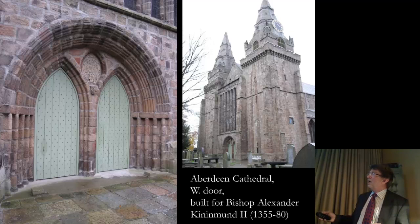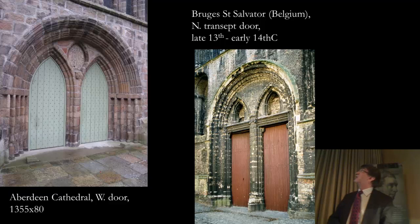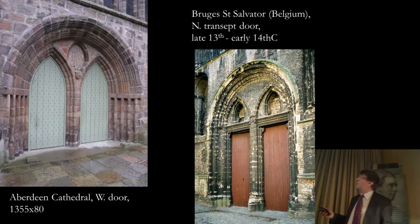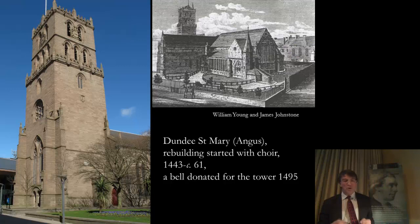I just wanted to show you the West Door here. The mouldings are very simplified because it's all granite. But this treatment with a round arch with two pointed sub-arches within it - I think, again, that's just possibly something that may have drawn its inspiration from the Netherlands. Just look at St Salvatore in Bruges, where we were looking at the choir stalls earlier on. This is the door of the North Transept, which may have been started in the late 13th century, although more likely perhaps early 14th century. The way you have this round arch with these two pointed arches set within it - I think it's certainly possible that it may have been from something like St Salvatore that the idea for Aberdeen was taken.